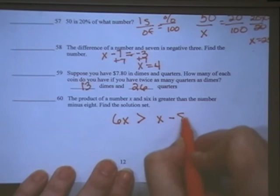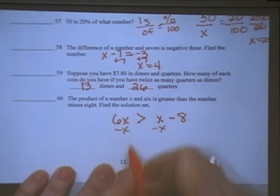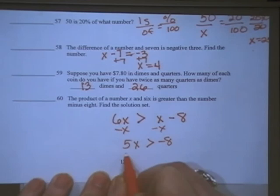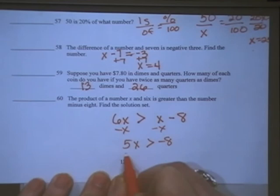Find the solution set. To find the solution set I need to collect like terms onto one side, giving me 5x is greater than negative 8. They are multiplying by 5, therefore I'm going to divide by 5 and x is going to be greater than negative 8 fifths.